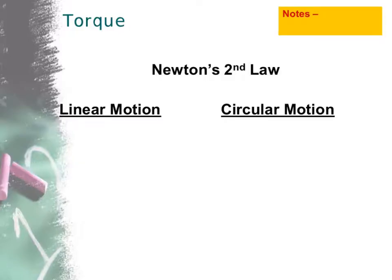To wrap this up, let's go back to Newton's second law. For linear motion, we have F_net equals ma. In circular motion, tau is the circular analogy to force. Mass becomes moment of inertia, capital I. Acceleration becomes alpha. So Newton's second law in circular motion is tau_net equals I times alpha.